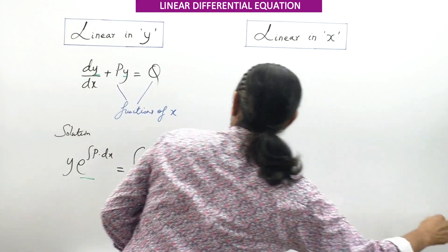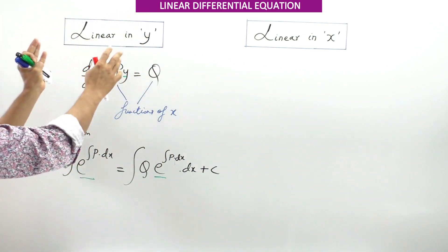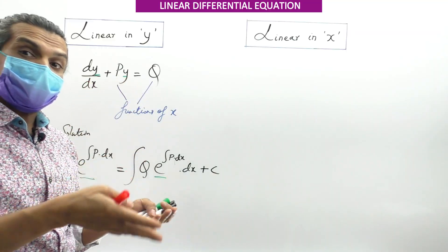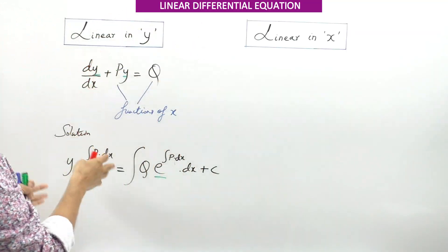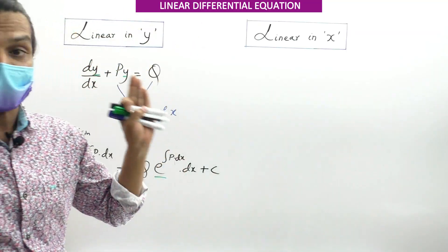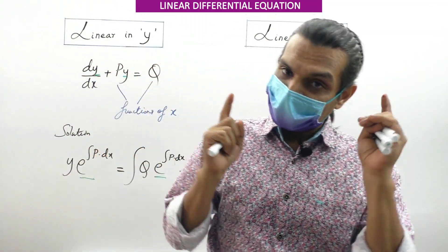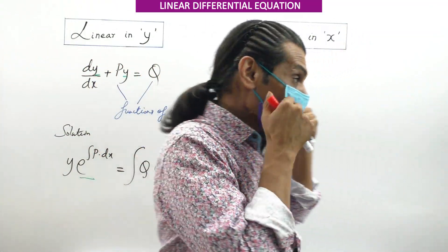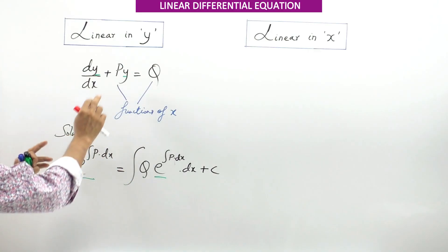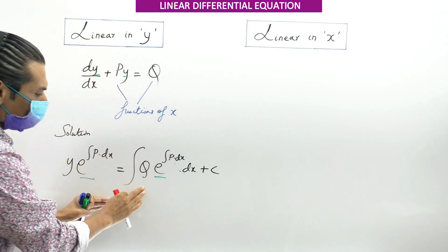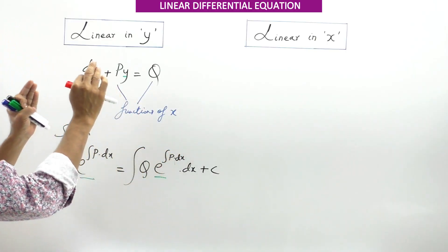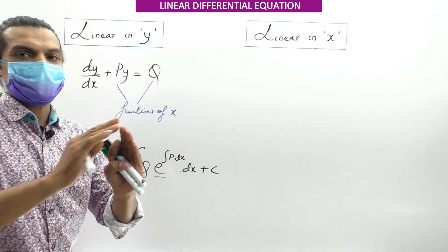So Linear in Y means the equation is of the form DY/DX + PY = Q, where P and Q are functions of X. The solution is: Y · e^(∫P dx) = ∫[Q · e^(∫P dx)] dx + C. Find ∫P dx first, substitute, integrate, and you have the solution.